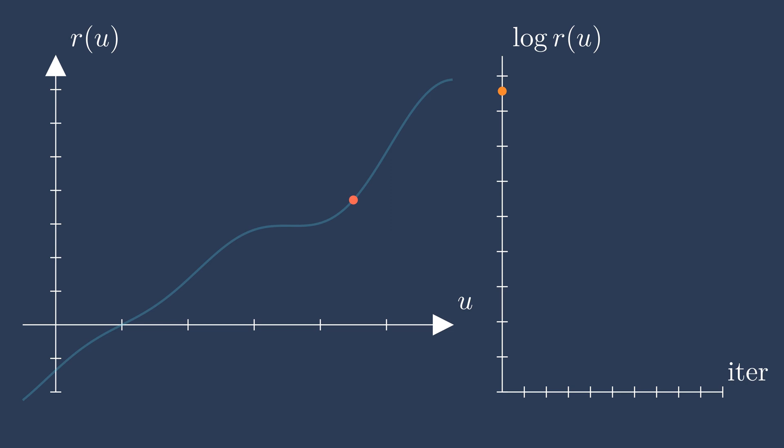One method might be to guess U values until we find one with a residual value that has the opposite sign as the initial guess. We can then use the left and right points as the lower and upper bounds because we know the residual must cross the x-axis somewhere in between them.